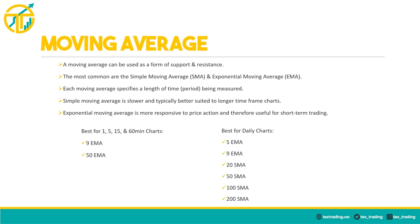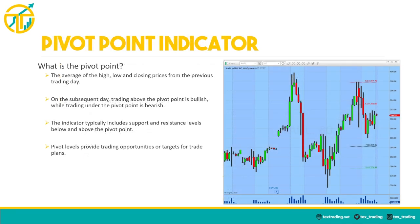For daily charts I use the 5 EMA, 9 EMA, 20 SMA, 50 SMA, 100 SMA, and 200 SMA. The 5 and 9 EMA on a daily time frame are very powerful short-term indicators I regularly use for potential entry points or profit targets. The daily 20 SMA is a widely respected indicator and often an area where investors buy an uptrending stock. The 50 SMA and 200 SMA on the daily time frame tend to carry a lot of weight among institutions and retail investors, often used as a gauge to determine if the stock is in an uptrend or downtrend.